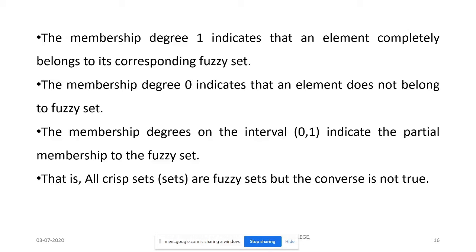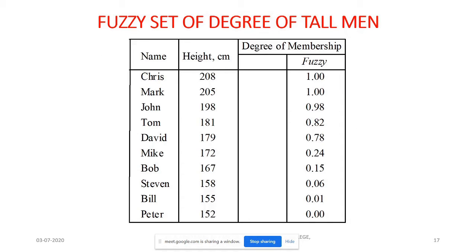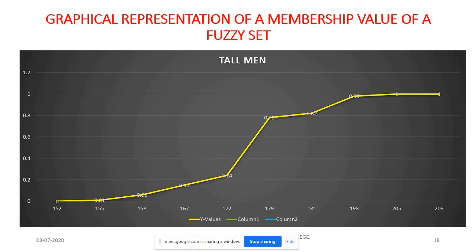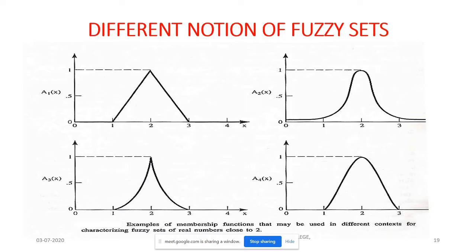All crisp sets are fuzzy sets, but the converse is not true. A crisp set can be treated as a fuzzy set by giving membership value 1 to all its elements. Using the same height example, now dealing with it as a fuzzy set — instead of just 0 or 1, we allow values in between. Lower heights get values starting from 0, higher values approach 1. The graphical representation of a fuzzy set has a gradual boundary, unlike the sharp boundary of a crisp set.